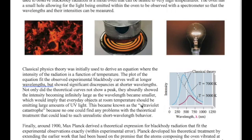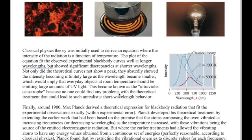This prediction is called the ultraviolet catastrophe, because even though nobody could find anything wrong with the classical explanation, it was predicting a large number of very high-energy radiation being emitted by all these objects. Of course, that's not true because what we observe is a drop in intensity as you go to lower wavelength.